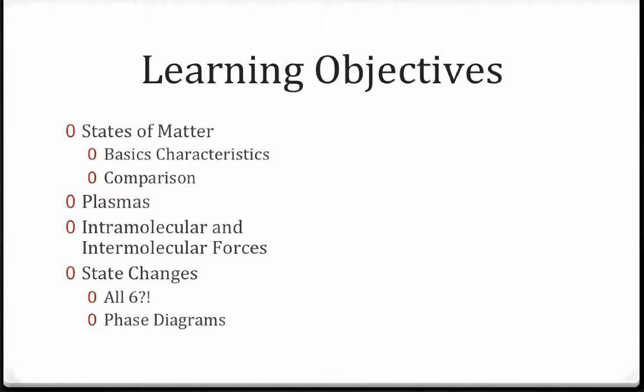Let's run down a list of the learning objectives for this video. We'll start our discussion by talking about the states of matter themselves. This will largely be a review from past years. We'll talk about the basic characteristics of our three different states, as well as a comparison of the characteristics at the atomic level that makes one state different from another. One of these states that we will talk about a little bit today, but we will not discuss a lot afterwards, is the fourth state of matter.